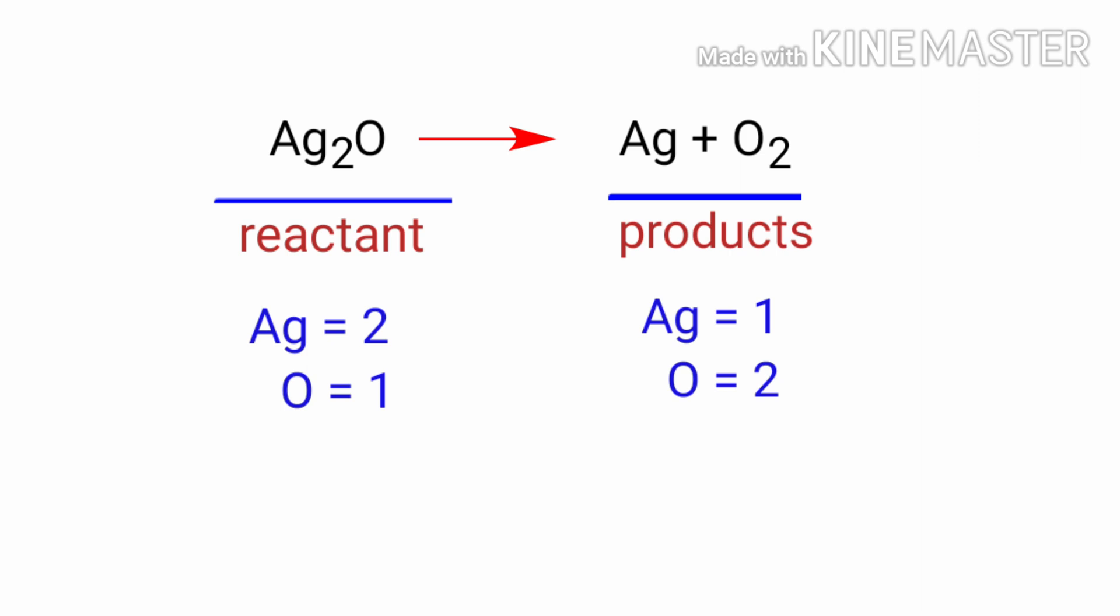In this equation, we need to balance the oxygen atoms first. To do this, we need to put a coefficient of 2 in front of Ag2O.